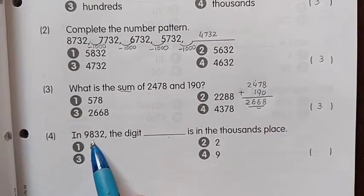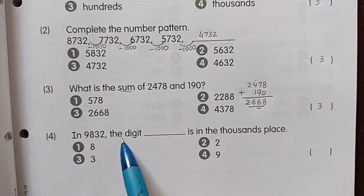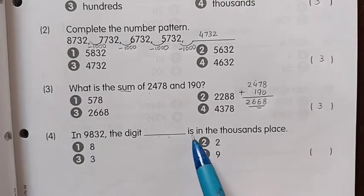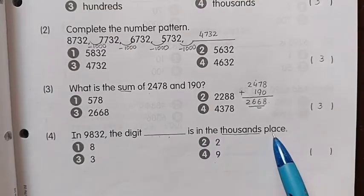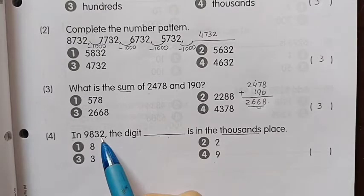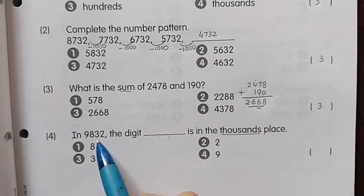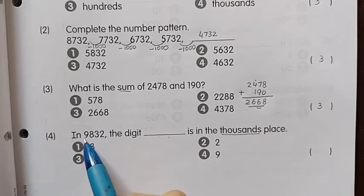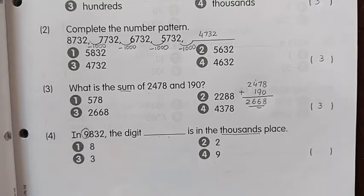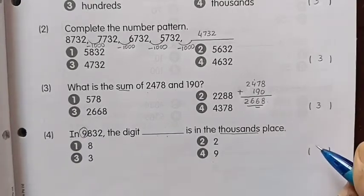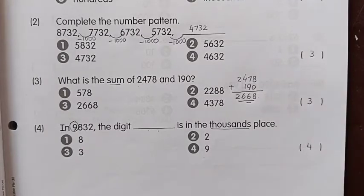Number 4: In 9832, the digit blank is in the thousands place. Look here, this is 1, 10, 100, and 10,000. So 9 is in the thousands place. The answer is number 4.